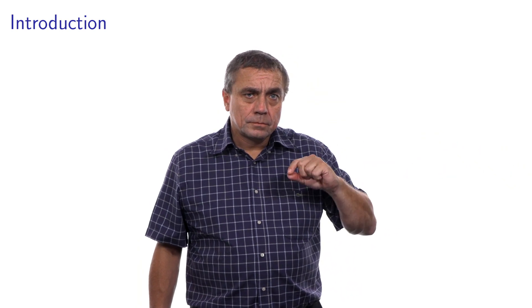The type of data that we have used so far is called cross-sectional. It's the observation of many individuals at a given point in time. We have another type of data in statistics called time series, where you take one variable and you have a sequence of observations of this variable over time. Panel data is basically the combination of the two.